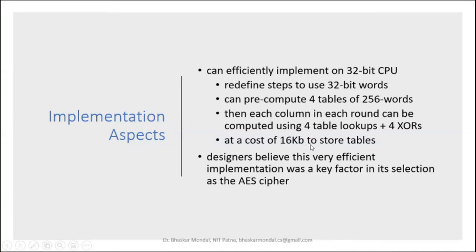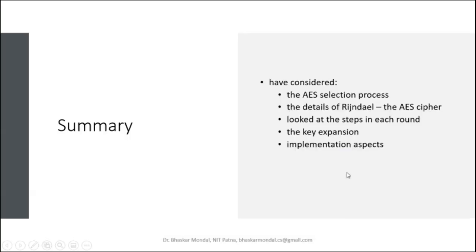Each round can be computed using 4 table lookups plus 4 XORs, at a cost of 16 KB to store tables in cache. The designers believed this very efficient implementation was a key factor in Rijndael's selection as the AES cipher.